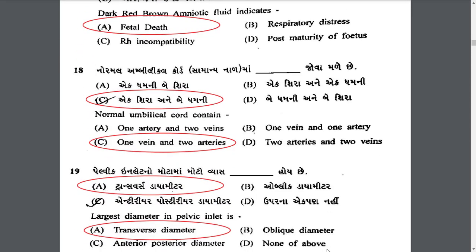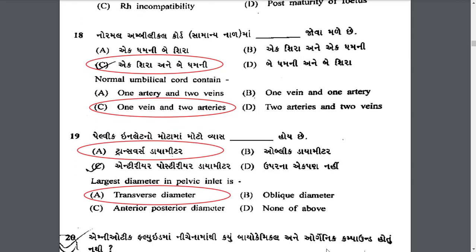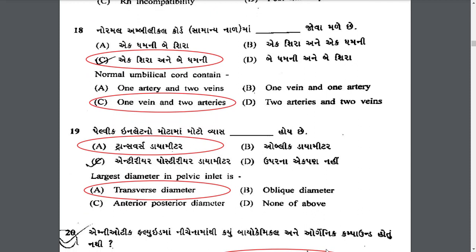Normal umbilical cord maa khali jhuwa maadhe chhe — normal umbilical cord contains one vein and two arteries. So friends, to easily remember: one vein and two arteries. The largest diameter in pelvic inlet is the transverse diameter, which is 13 cm.